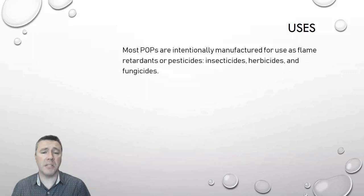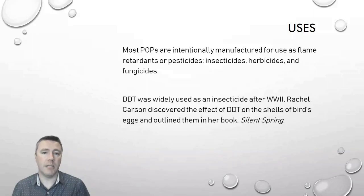One of the best-known persistent organic pollutants is DDT. DDT was widely used as an insecticide after World War II. Thanks to the work of biologist Rachel Carson, who initially began studying the effects of DDT on the shells of birds' eggs, we now know, through her work and her book called Silent Spring, that DDT had much farther-reaching effects than originally thought.